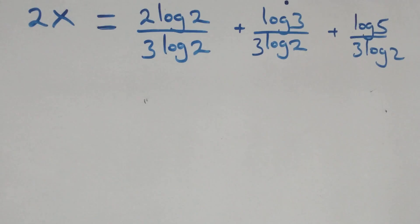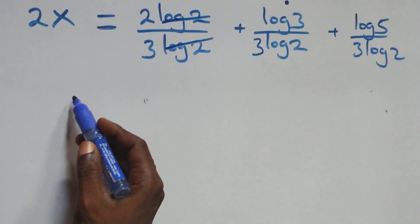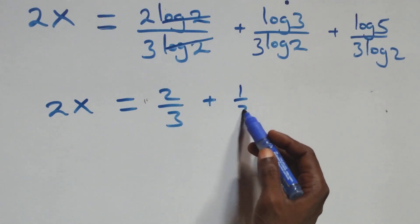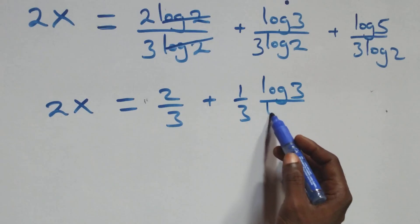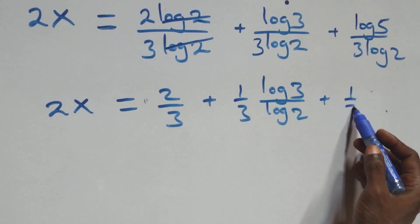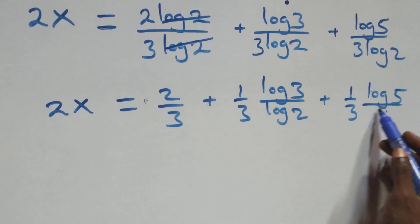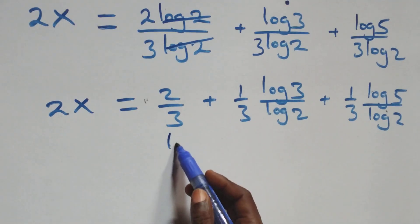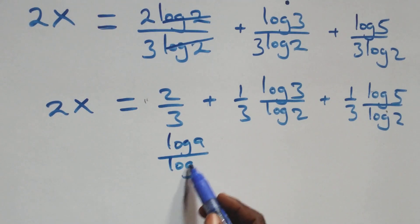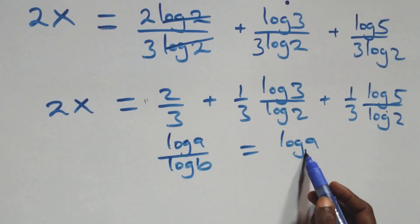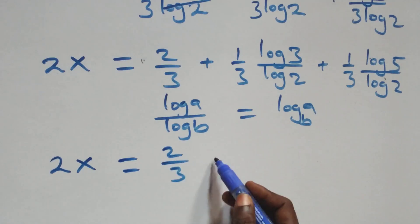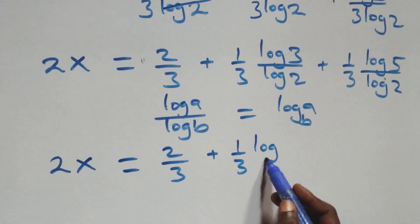Next step here: log 2 cancels each other, two over three is left here. That is, we have 2x equals to two over three. Plus here, we can write it as one over three times log 3 over log 2, plus one over three times log 5 over log 2. Then next step here, we apply change of base: when we have log a over log b, this is the same thing as log a to base b. This gives us 2x equals to two over three plus one over three log 3 base 2.